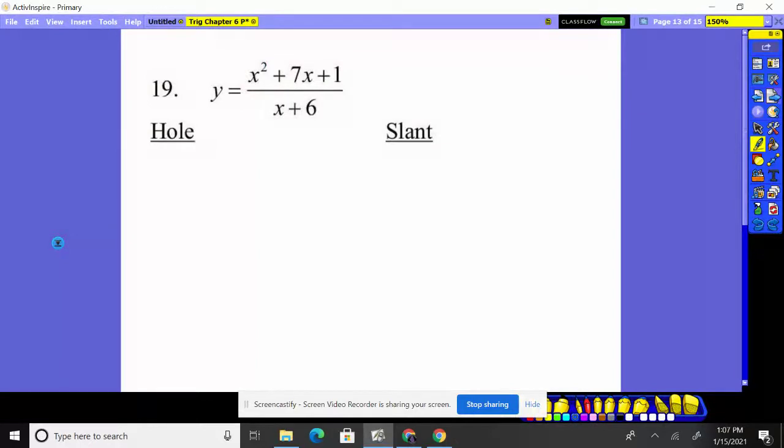Number 19, we want the hole and the slant. The slant occurs when the top is one more than the bottom. That's this situation. So it looks like there'll be a slant. However, we got to make sure that there's not a hole, that this top doesn't factor to something and an X plus six cancels out. The top does not factor.